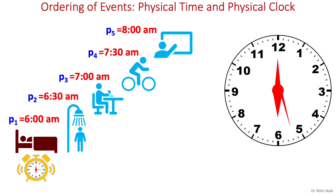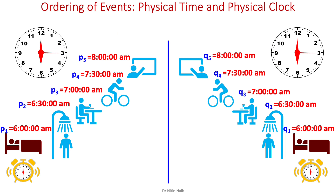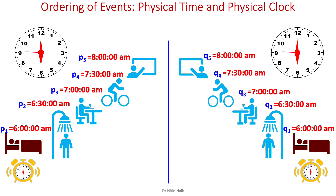So in the real world, ordering of events is established using physical time and clock, and we know the exact time of events. Let's make this example distributed, assuming me and my friend are both doing the same activities at the same time at two different locations based on two different physical clocks. My events are ordered based on my physical clock, and my friend's events are ordered based on his physical clock. Remember, all the clocks are reasonably precise, stable and accurate, but they are not perfect. We can arrange our own events in total order and determine their happen-before relationship based on our own clock in isolation.